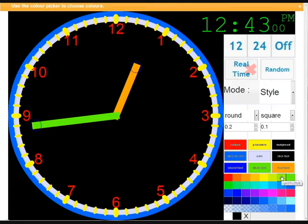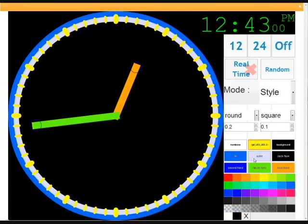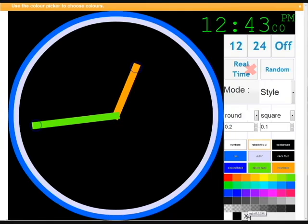And now the X on the colour picker actually removes colours. So it's possible to remove the numbers by clicking that selection and then X. It's possible to remove the graduations. And now we have a clock which is pretty hard to tell the time on.